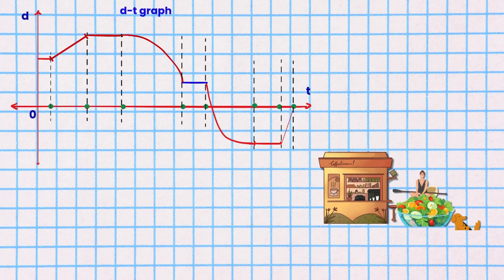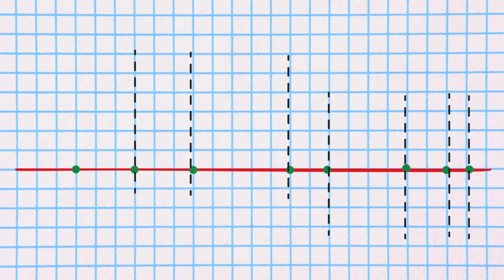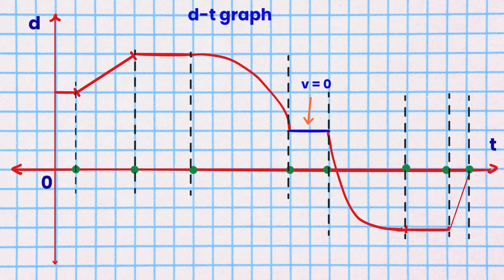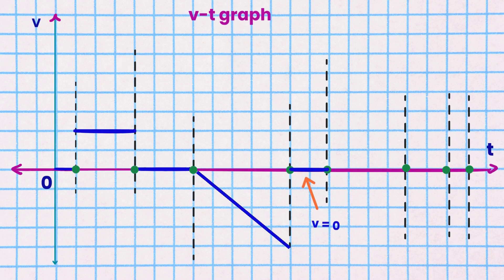Segment 5. They eat lunch for some time. They have zero velocity. Their zero velocity is shown as a horizontal line on the time axis of the VT graph.